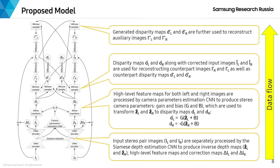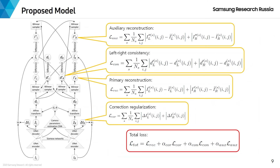Also, the secondary disparity maps are further used to reconstruct auxiliary images. Finally, the reconstructed images and disparity maps are used to construct several loss terms to train the model. First, the primary reconstruction term, borrowed from our baseline model, is an L1 difference between the reconstructed left and right images and their respective corrected versions. Second, our novel correction regularization term constrains the image correction maps so that they do not remove geometric cues from the stereo pair images.